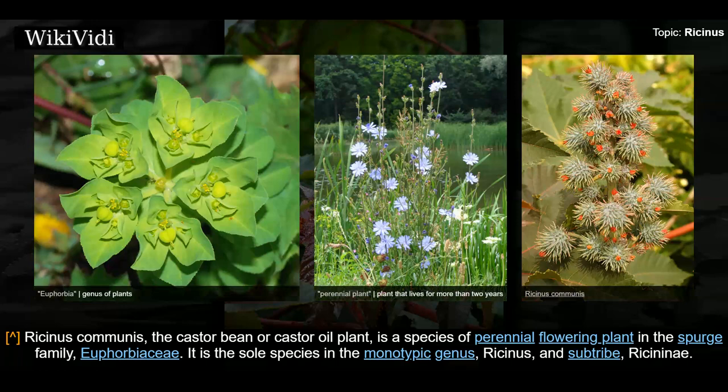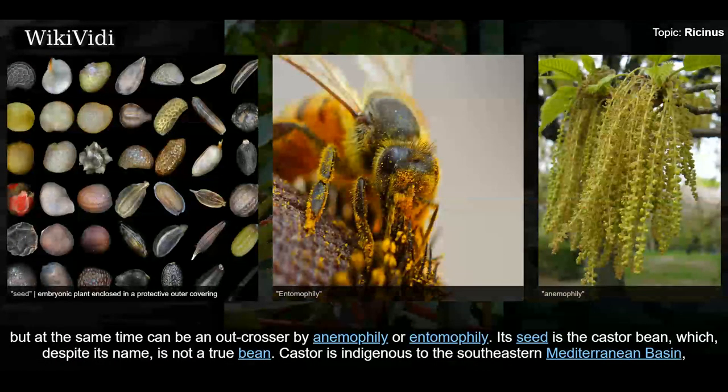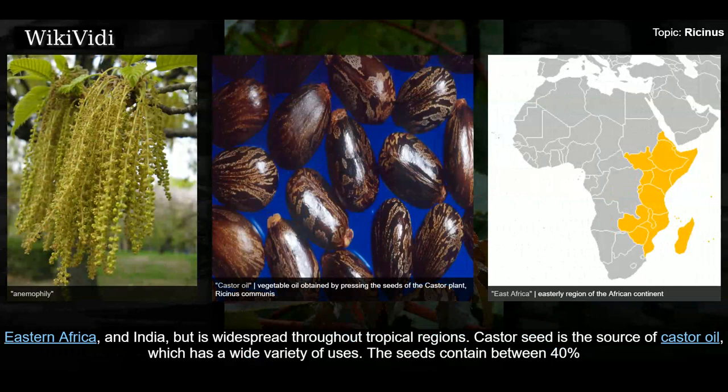Ricinus communis, the castor bean or castor oil plant, is a species of perennial flowering plant in the spurge family Euphorbiaceae. It is the sole species in the monotypic genus Ricinus. The evolution of castor and its relation to other species are currently being studied using modern genetic tools. It reproduces with a mixed pollination system which favors selfing by geitonogamy but can also be an outcrosser by anemophily or entomophily. Its seed is the castor bean, which despite its name is not a true bean. Castor is indigenous to the southeastern Mediterranean basin, eastern Africa, and India, but is widespread throughout tropical regions.